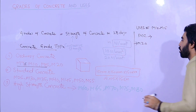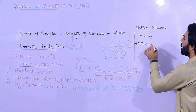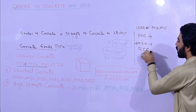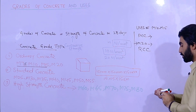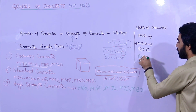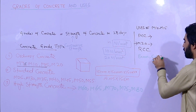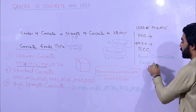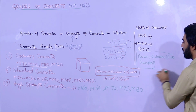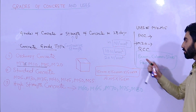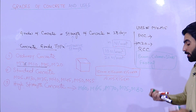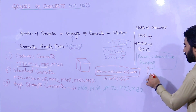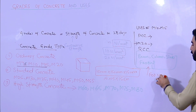M20 grade concrete is used for RCC work. From M20, we can start RCC work. It is specially used for beams, columns, slabs, and footings — but for normal residential buildings, not high-load structures. Since M20 is not a high strength concrete, it is suitable for normal residential building construction.